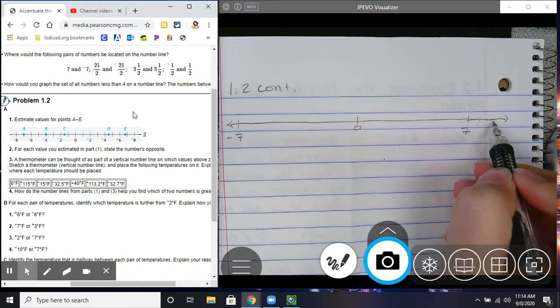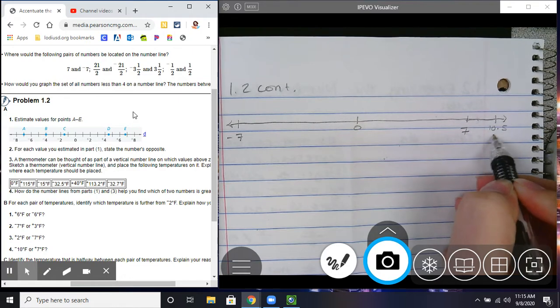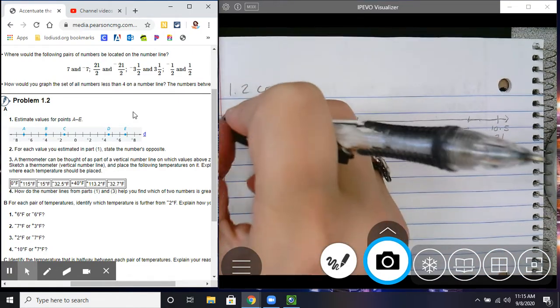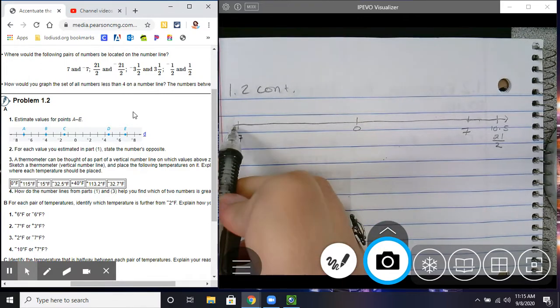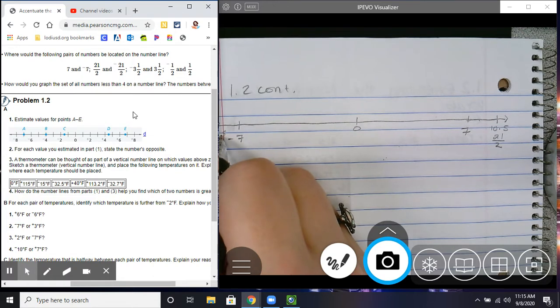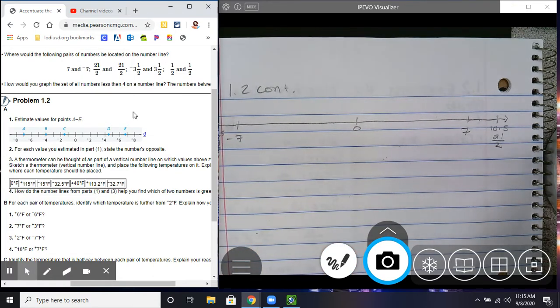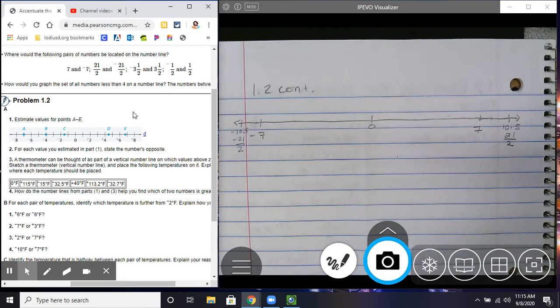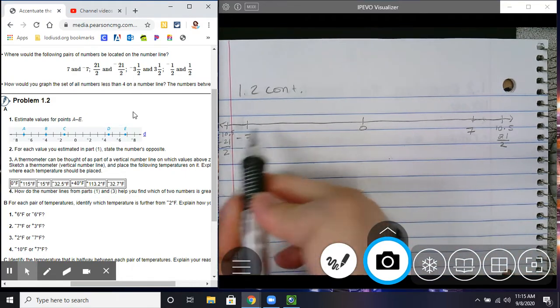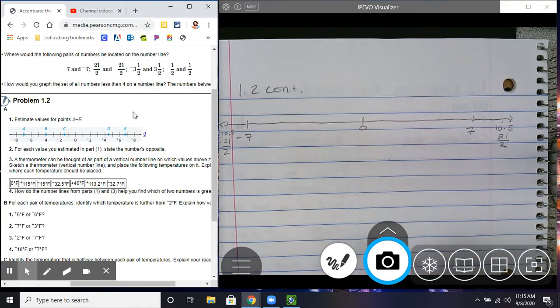So, this would be 10 and a half, otherwise known as 21 over 2. And then this is going to be negative 10 and a half, otherwise known as negative 21 over 2. Can you see that? No, you can't. There you go. It does not need to be a perfect amount. I'm just kind of sketching.